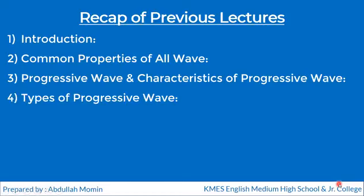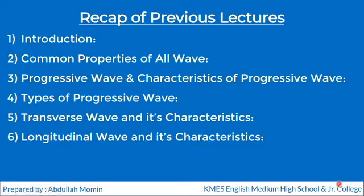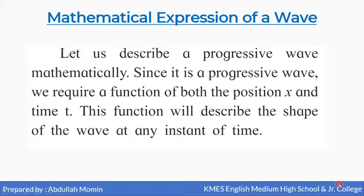Then we have seen progressive waves and the characteristics of progressive waves. After that we studied there are two types of progressive wave: transverse wave and longitudinal wave — we have seen the definitions and characteristics of both. Now in this lecture we are going to study about the mathematical expressions of the wave.